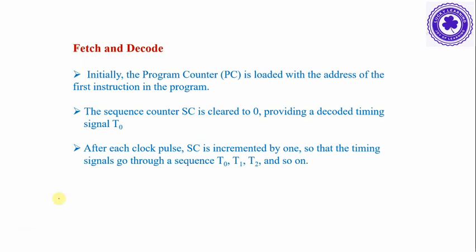To fetch and decode, initially the program counter is loaded with the address of the first instruction, and the sequence counter SC is cleared to zero, providing a decoding timing signal T0. After each clock pulse, the sequence counter is incremented by one so that timing signals go through the sequence T0, T1, T2, and so on, as discussed in timing and control.